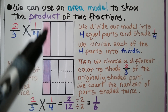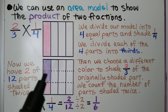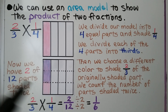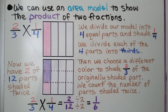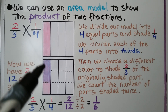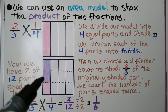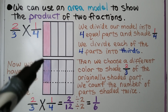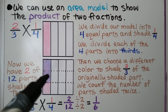We shade one-fourth. Then we divide each of the four parts into thirds, so now we have thirds going this way. Then we choose a different color to shade two-thirds of the originally shaded part. We count the number of parts shaded twice: one, two.